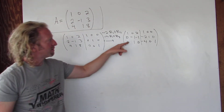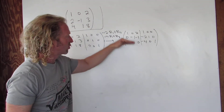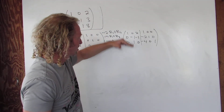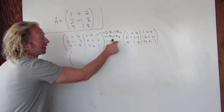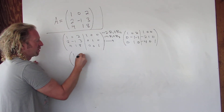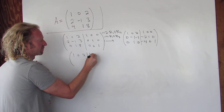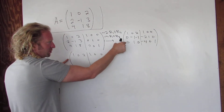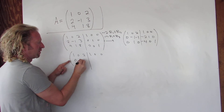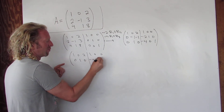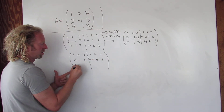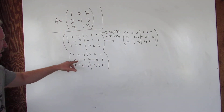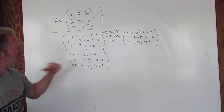Now we need to make the (2,2) entry a 1. We can switch any two rows — that's one of the row operations. So we'll switch the last two rows, keeping the first row intact. After switching: row 2 becomes 0, 1, 0, negative 4, 0, 1. You're allowed to switch any two rows. Looks good.